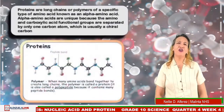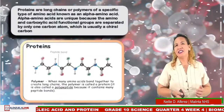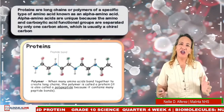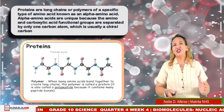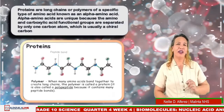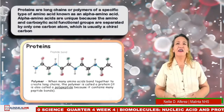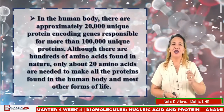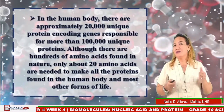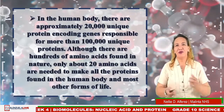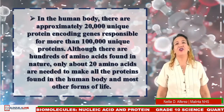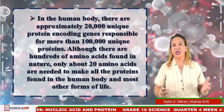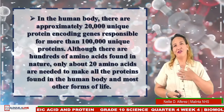Proteins are long chains or polymers of a specific type of amino acid known as the alpha amino acid. Alpha amino acids are unique because the amino and carboxylic acid functional groups are separated by only one carbon atom, which is usually a chiral carbon. In the human body, there are approximately 20,000 unique protein-encoding genes responsible for more than 100,000 unique proteins. Although there are hundreds of amino acids found in nature, only 20 amino acids are needed to make all the proteins found in the human body.